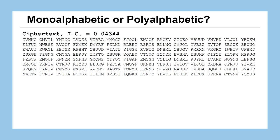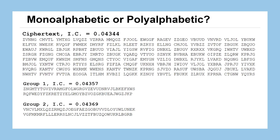For a ciphertext with an IC of 0.04344 — clearly polyalphabetic — we split it into groups and compute the IC of each subgroup. Starting with two groups (alternating characters), both subgroups still look polyalphabetic. Since splitting by a Vigenère keyword should make each subgroup look like a Caesar distribution with IC close to 0.065, and these aren't close, the keyword is probably not length two.